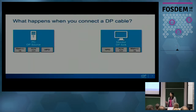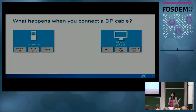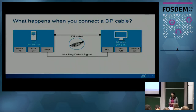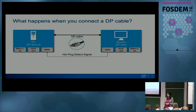Let's start with the basics. What happens when you connect a DP cable? You have the DP source on one end, which is your PC, and the DP monitor on the other end. When you connect it with the DisplayPort cable, the first thing that happens is the hot plug detect signal that the sync device sends to the source device - it's just an interrupt signal saying there's a new connection.